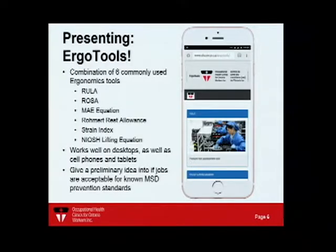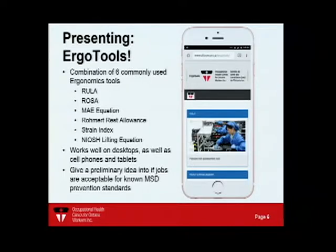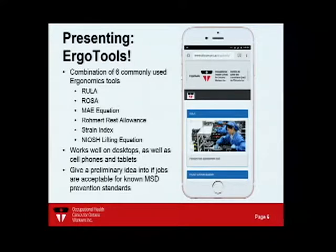ErgoTools right now has six different commonly used ergonomics tools: the Rapid Upper Limb Assessment, the Rapid Office Strain Assessment, the Maximum Acceptable Effort equation, the Rohmert Rest Allowance, the Strain Index, and the NIOSH Lifting Equation. Visit ocow.on.ca/ergotools to see them all from your phone or laptop.